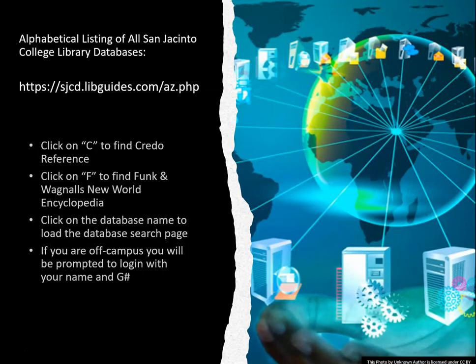Here's how to find the databases by name. Since we only have two encyclopedia databases, this is the easiest way. Credo Reference is filed under the letter C, and Funk and Wagnall's New World Encyclopedia is filed under the letter F. Yeah, librarians like to alphabetize stuff — go figure.